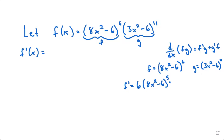For the inside function 8x squared, we use the power rule again: bring down the 2, giving 16x to the power of 1, and the constant negative 6 goes to 0. Simplifying, 6 times 16 gives 96, so f prime equals 96x times 8x squared minus 6 to the power of 5.